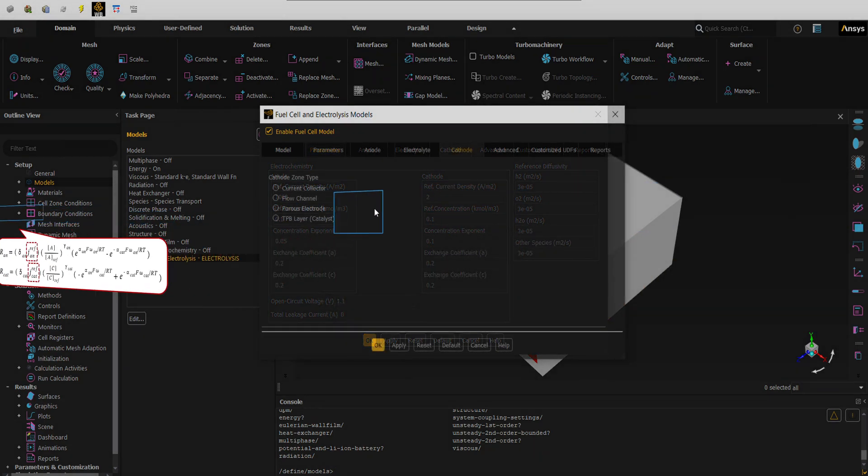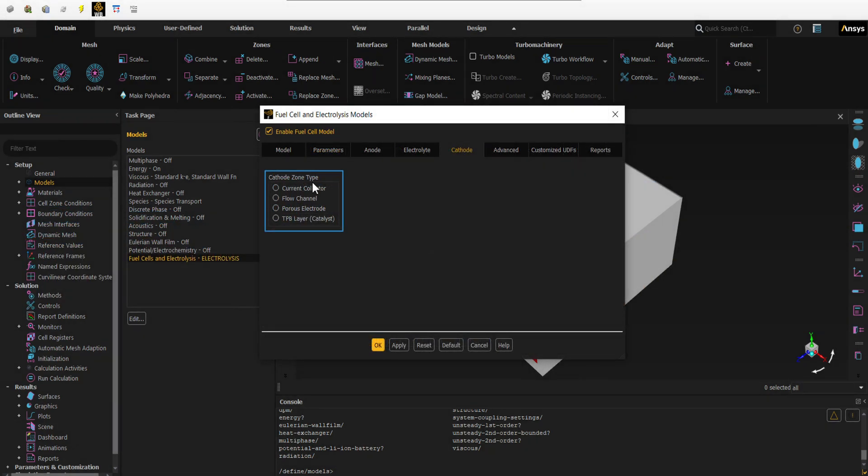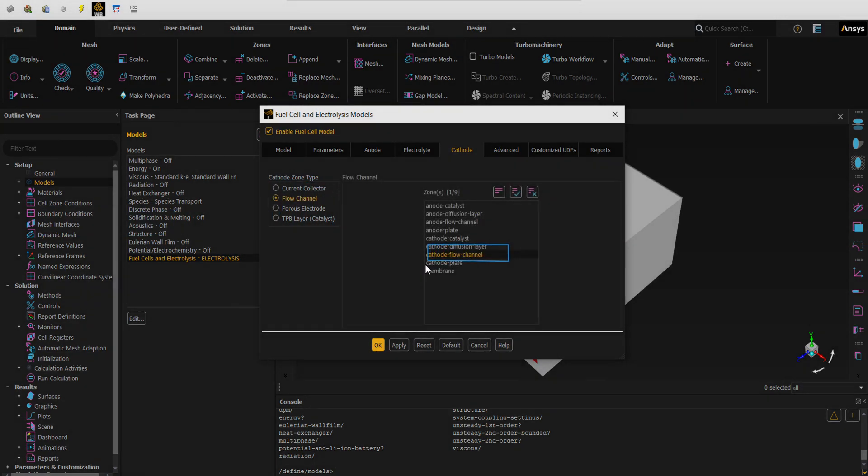As you can see, in the subsection of the cathode zone type section, the different layers of the electrolyzer are displayed. We must select each option of these layers to determine the related zone through the computational domain of the electrolyzer. Then, in the zone box that appears, we select the zone corresponding to the cathode flow channel from the computational domain.